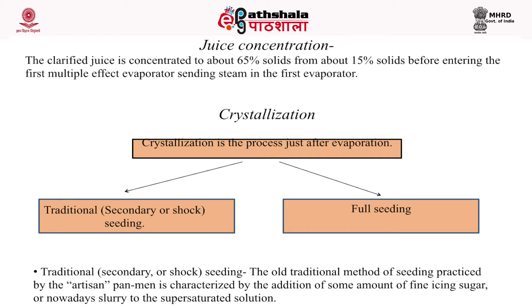The various seeding techniques include: first, traditional or shock seeding. The traditional method practiced by the artisan pan man involves adding some amount of fine icing sugar or slurry to the supersaturated solution. If supersaturation is large enough, new crystals will be formed. Slurry is a suspension of finely ground sugar mixed in isopropyl alcohol.